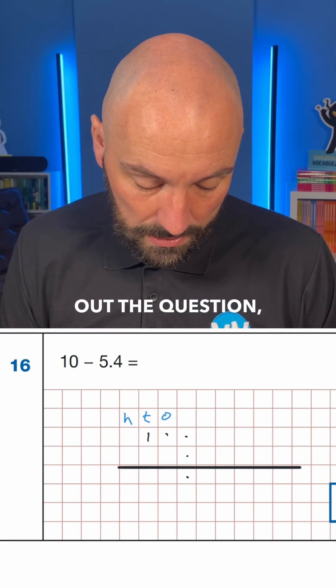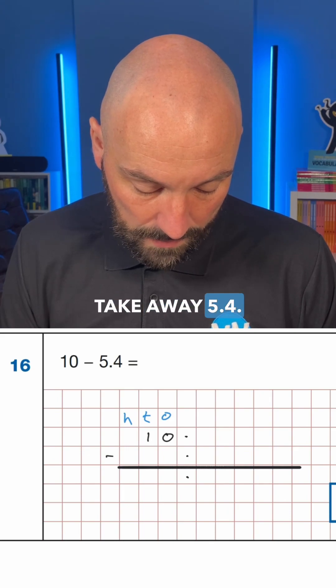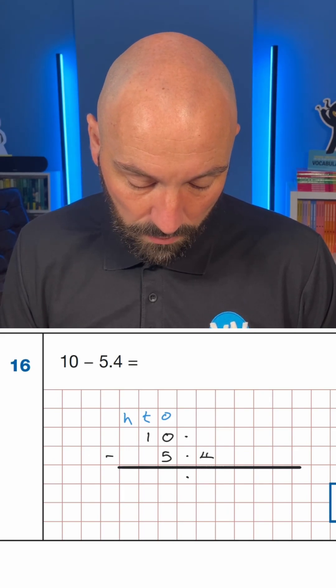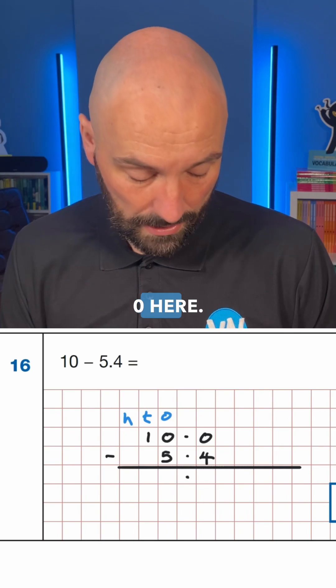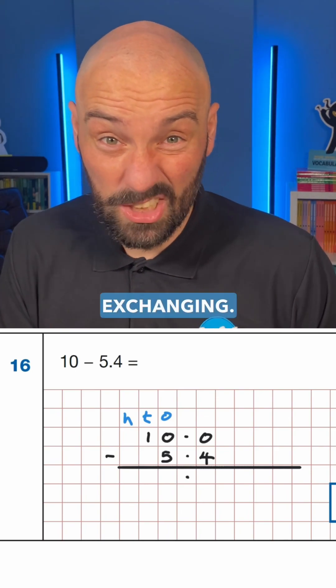We can then lay out the question 10 take away 5.4. We're going to need a place holding 0 here, and then we're going to need to go through exchanging.